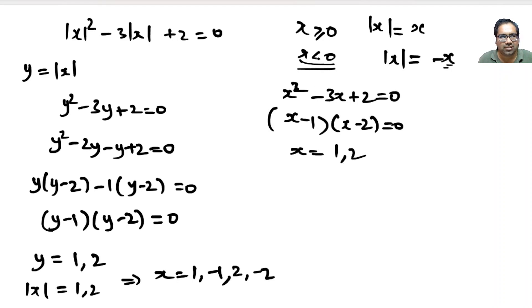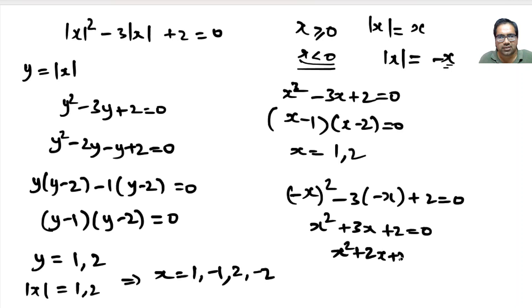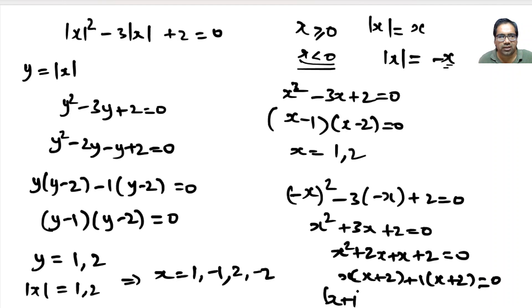Otherwise, when x is less than 0, absolute value of x becomes minus x. So the equation becomes (minus x) squared minus 3 times (minus x) plus 2 equals 0, which simplifies to x squared plus 3x plus 2 equals 0. That factors as (x plus 1)(x plus 2) equals 0, giving x equals minus 1 or minus 2.